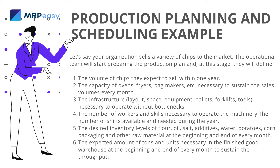Continuing the chips company production plan: 6. The desired inventory levels of flour, oil, salt, additives, water, potatoes, corn, packaging, and other raw materials at the beginning and end of every month. 7. The expected amount of tons and units necessary in the finished goods warehouse at the beginning and end of every month to sustain throughput.